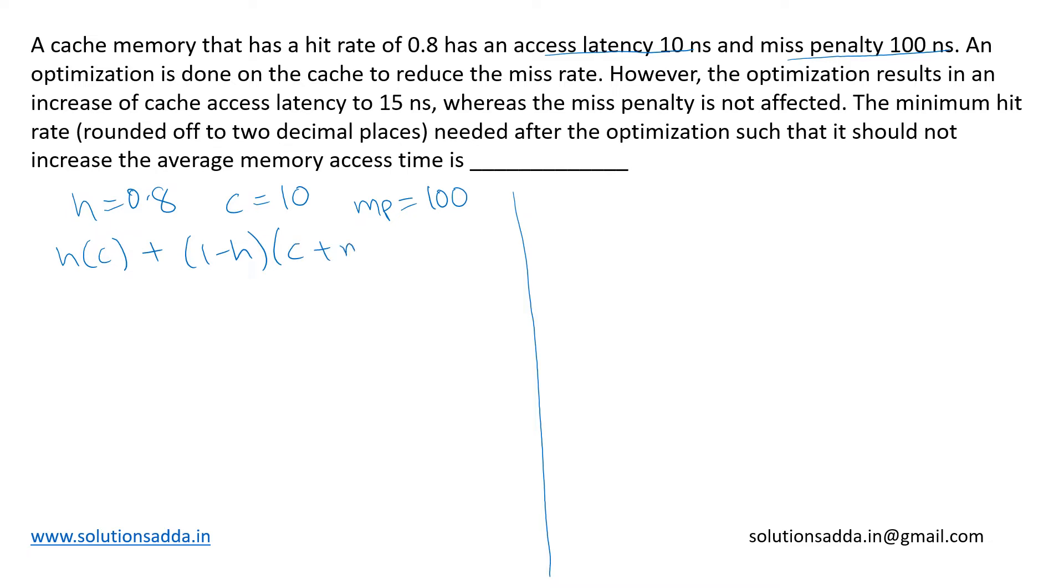This becomes 0.8 into 10 plus 1 minus h, which is the miss rate equal to 0.2, into 10 plus 100, which is the cache access time plus miss penalty in case of failure. So this gives us 8 plus 0.2 into 110, which is 8 plus 22 equals 30 nanoseconds.